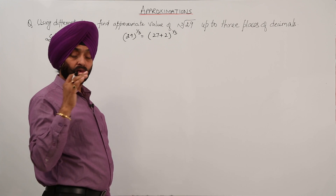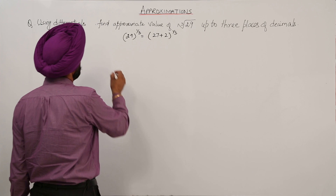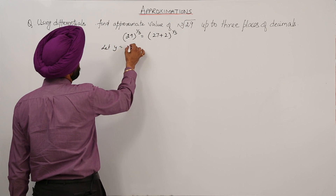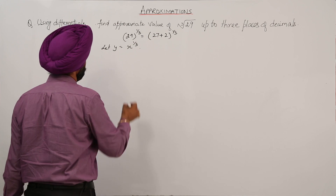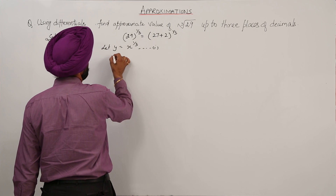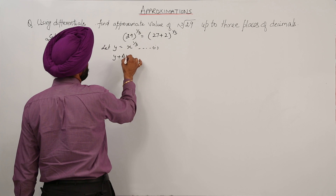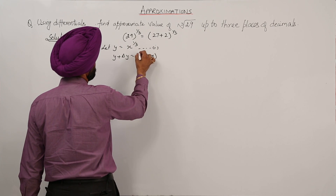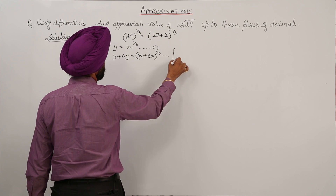The first thing is to always judge what is the nearest value for the given question. Let y be equal to x raised to power 1/3 — call this equation 1. Then y plus delta y is equal to x plus delta x, raised to power 1/3 — call this equation 2.